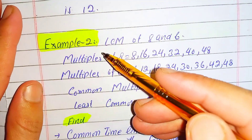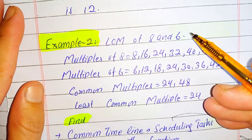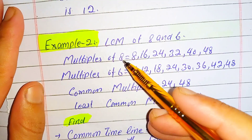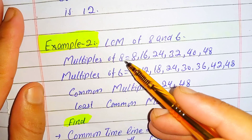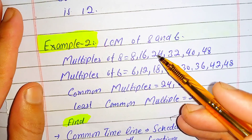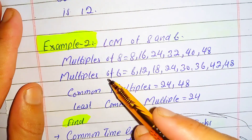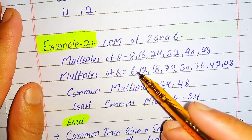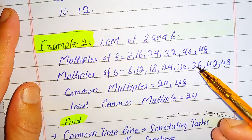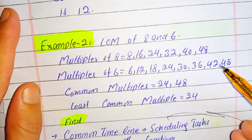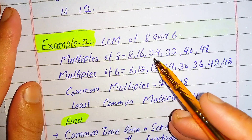In another example, if we want to find the LCM of 8 and 6, we write the multiples of 8: 8, 16, 24, 32, 40, 48. And the multiples of 6: 6, 12, 18, 24, 30, 36, 42, 48.